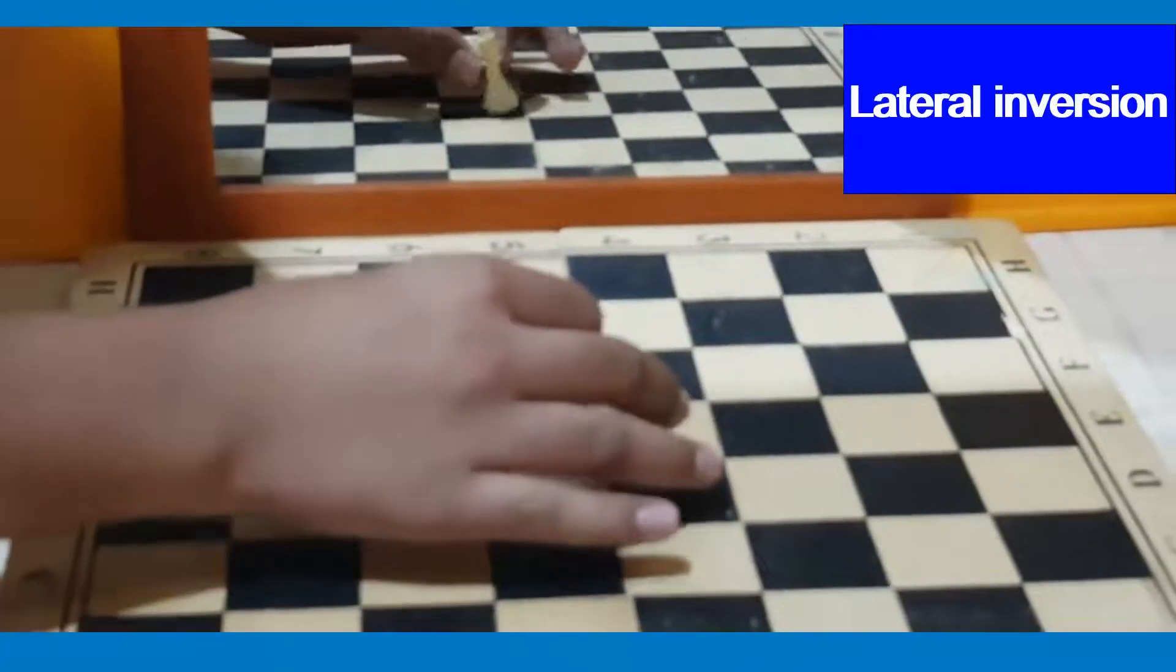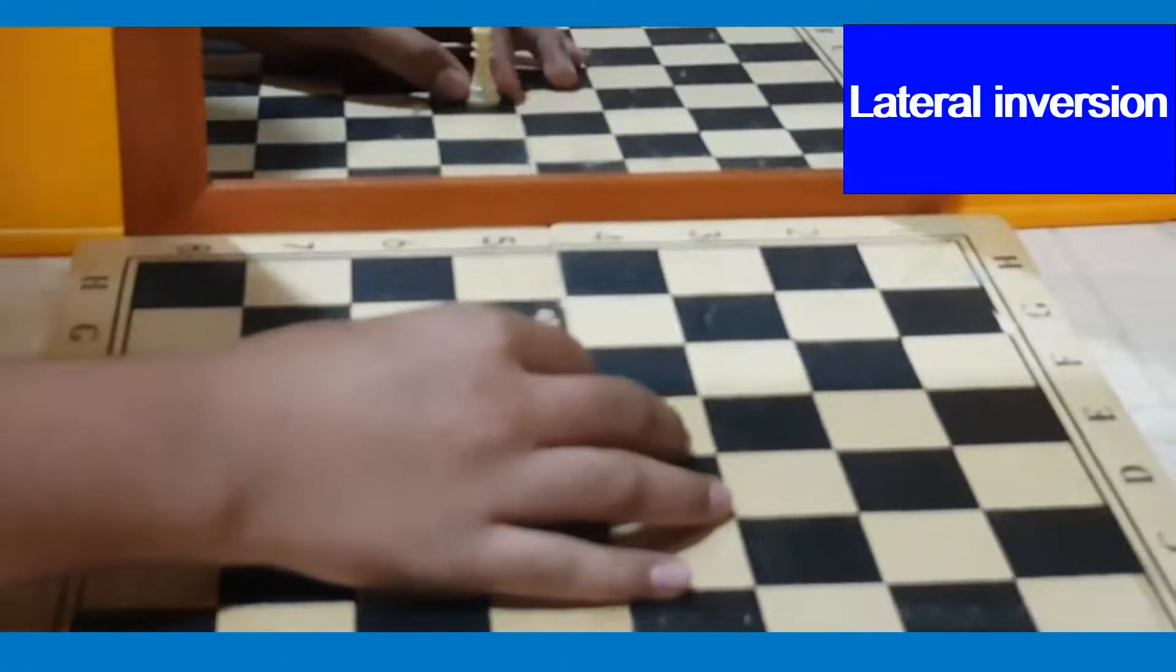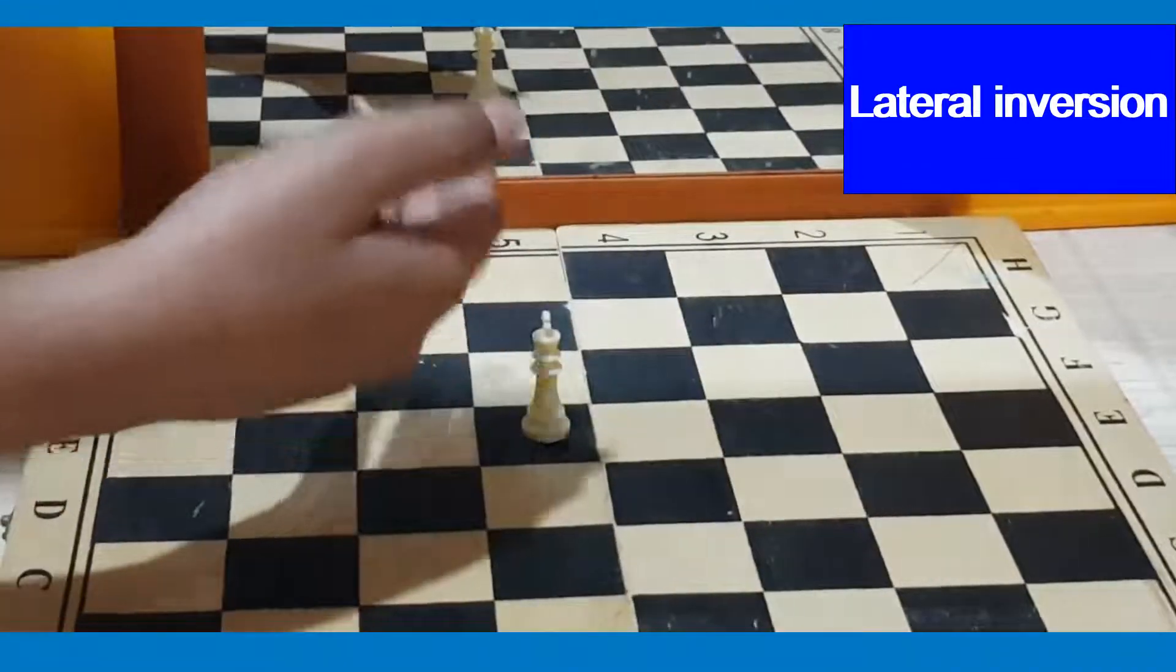Alright, and the last thing we had learnt was lateral inversion, which means the right side of the object will appear left and the left side will appear right.